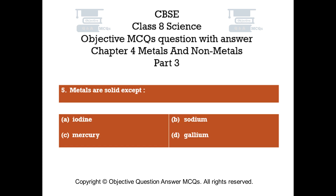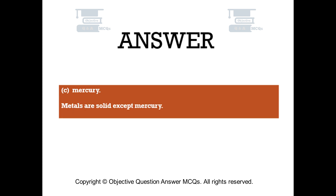Question number 5. Metals are solid except. Option A: iodine. Option B: sodium. Option C: mercury. Option D: gallium. The right answer is option C. Mercury. Metals are solid except mercury.